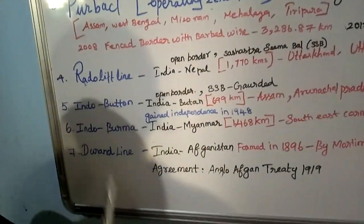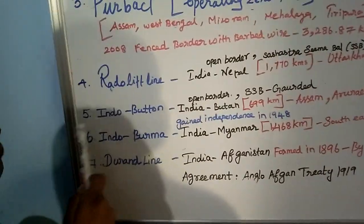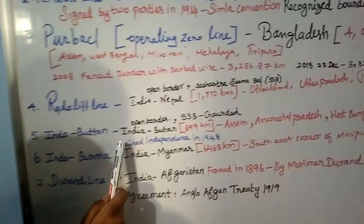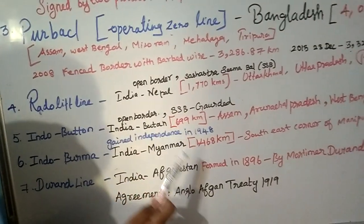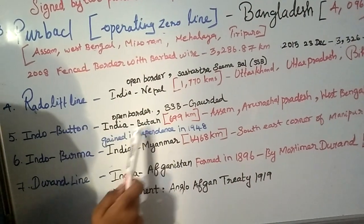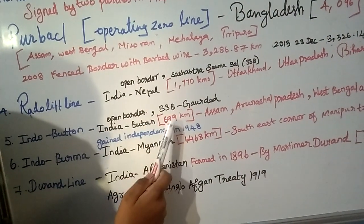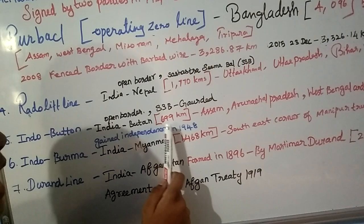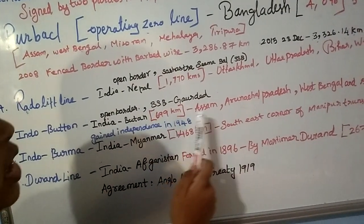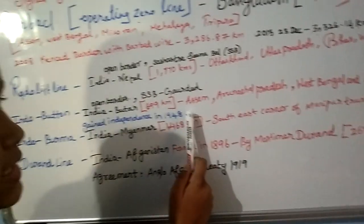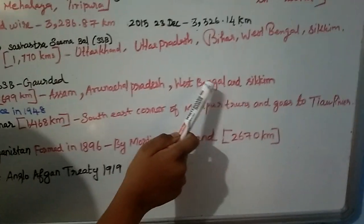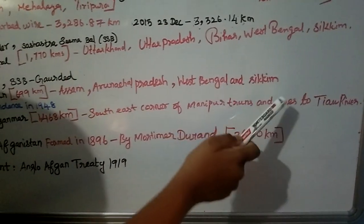Now let's learn about the Indo-Bhutan border, which is the border between India and Bhutan. It is also an open border, so it is guarded by SSB. That is 699 km, sharing the states of Assam, Arunachal Pradesh, West Bengal and Sikkim.